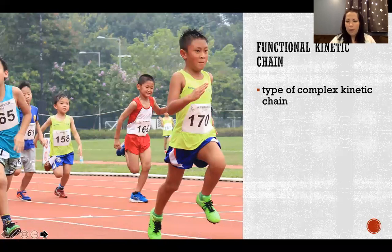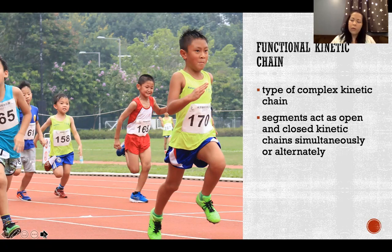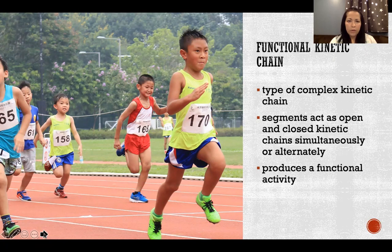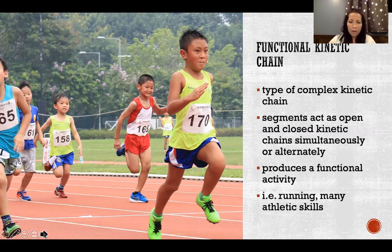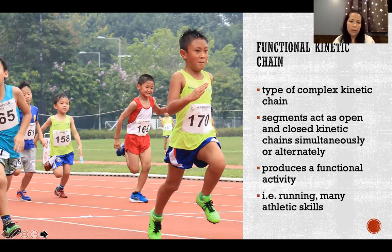A functional kinetic chain is a type of complex kinetic chain where we have alternating or simultaneous open and closed kinetic chains happening to produce a functional activity. It's not super common in life that we have purely open or purely closed kinetic chains — we're usually experiencing a blend of both. Running is a great example: when one foot is in contact with the ground, that limb is a closed kinetic chain; while the other leg is up in the air, that's an open kinetic chain. The arms are open kinetic chains the whole time, while the legs alternate open, closed, open, closed. Many athletic skills and functional movements are some blend or alternation of open and closed kinetic chains.